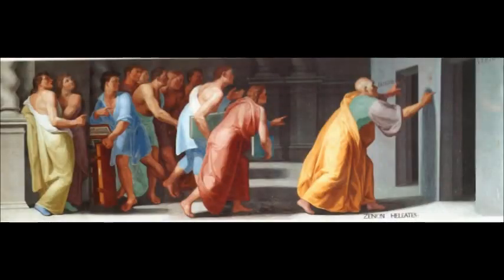Zeno of Elea, circa 490 to 430 BC, was a pre-Socratic Greek philosopher of Magna Graecia and a member of the Eleatic school founded by Parmenides. Aristotle called him the inventor of the dialectic. He is best known for his paradoxes, which Bertrand Russell has described as immeasurably subtle and profound.